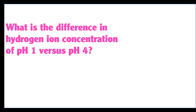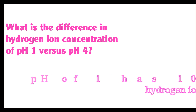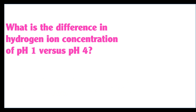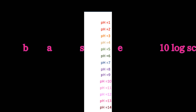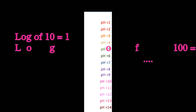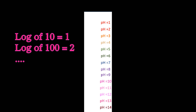What is the difference in hydrogen ion concentration of pH 1 versus a pH of 4? A pH of 1 has 1,000 times more hydrogen ions than a pH of 4. Why? Because it's a base 10 log scale. By definition of the log function, a change in concentration of 10 leads to a pH of 1. The log of 10 is 1, the log of 100 is 2, etc.